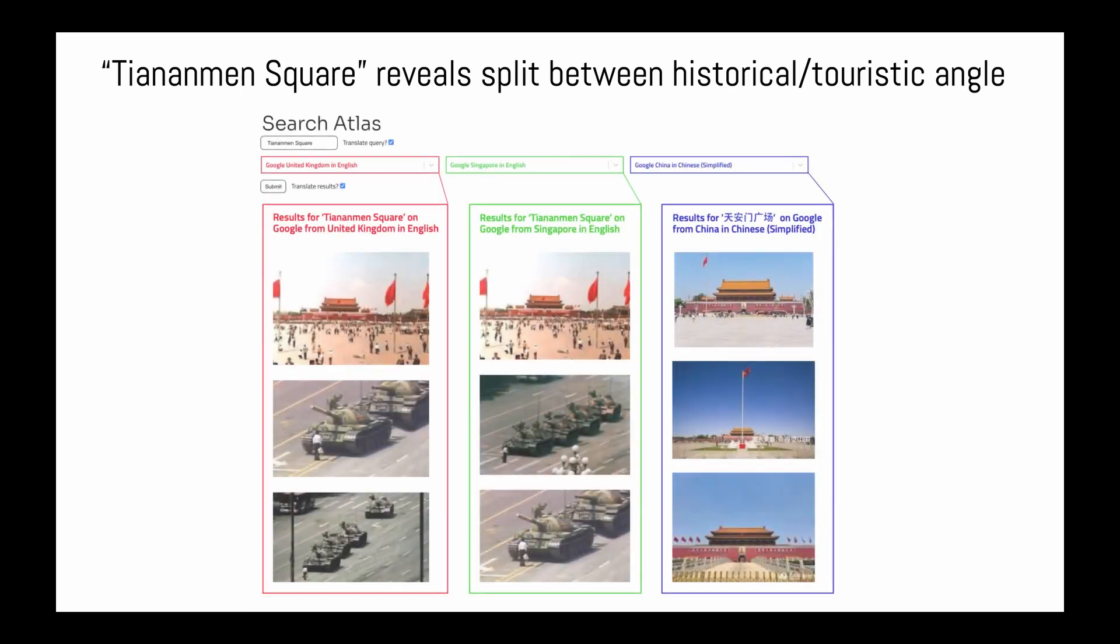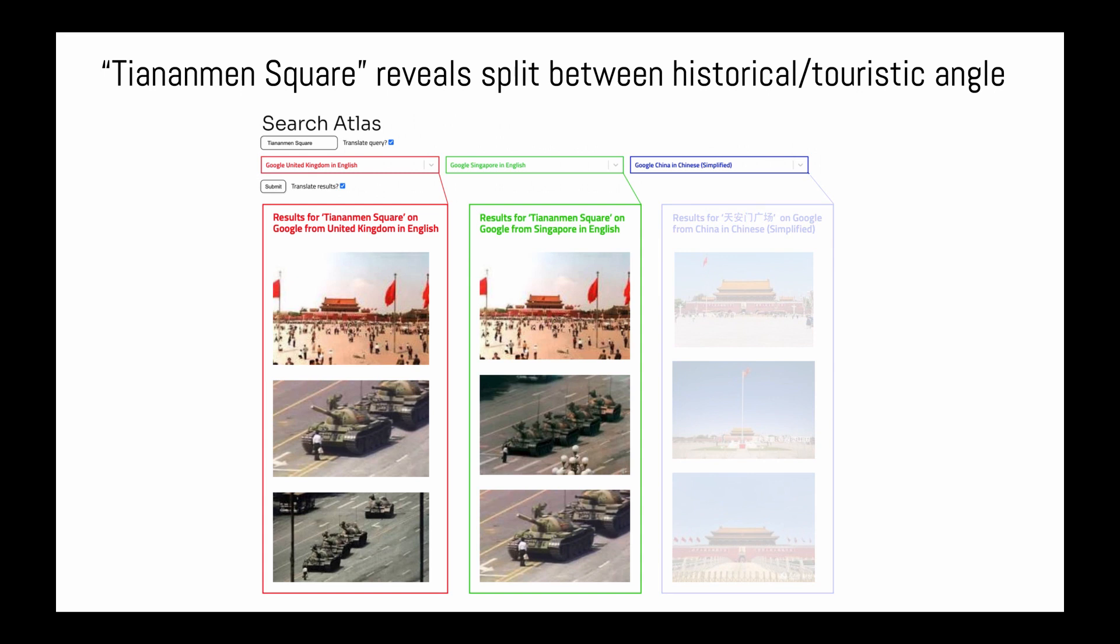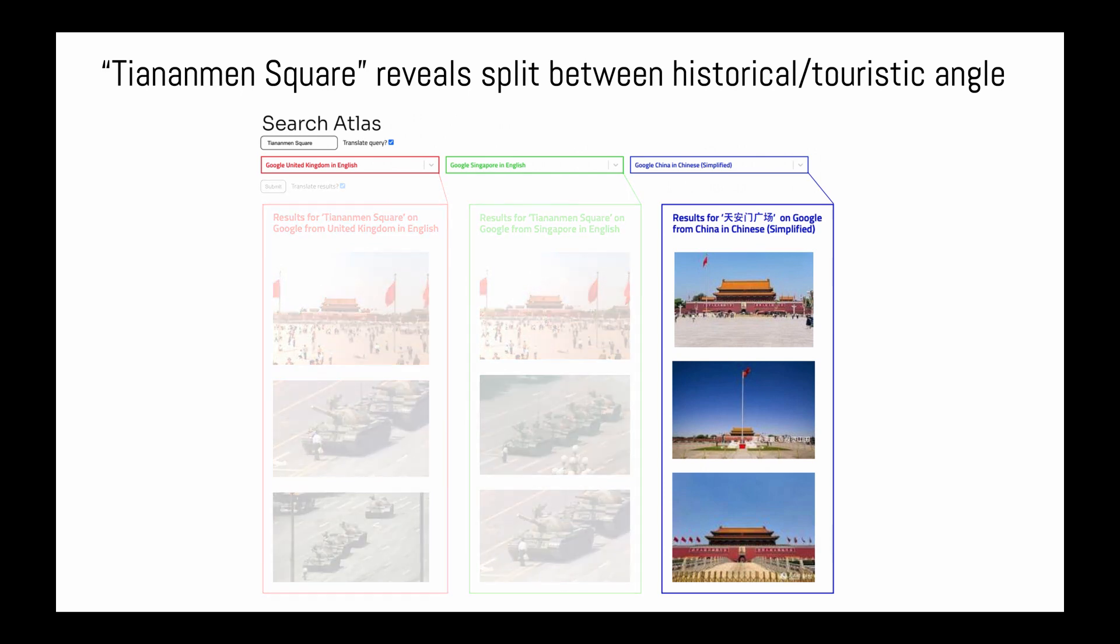Our tool also supports image search. Continuing with a search about a politically disputed topic, these are the results for a search for Tiananmen Square in the United Kingdom, Singapore, and China. In the United Kingdom and in Singapore, the results surface photographs of tanks and soldiers in the 1989 protests, which were widely circulated in the international press. In mainland China, they present touristic and promotional images. Google is blocked by the Chinese government, but it's possible to circumvent the block and use Google with China as the country setting.